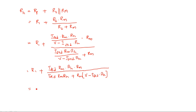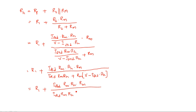That is equal to R1 plus IFSD times RM times RH times RM divided by — taking IFSD times RM times RH common, then 1 plus RM went out. So we get V minus IFSD times IFSD times RH divided by IFSD times RH.